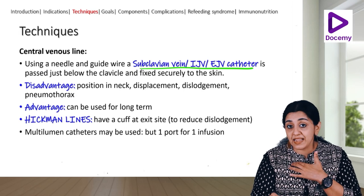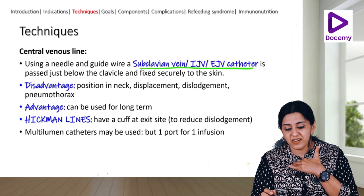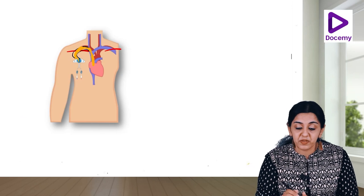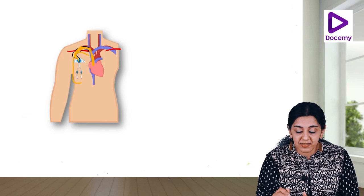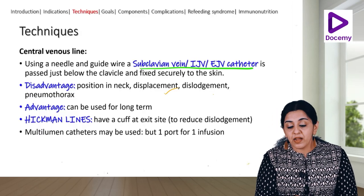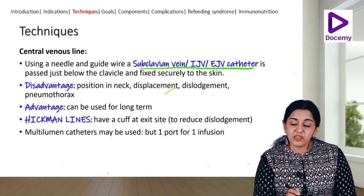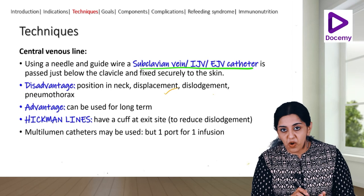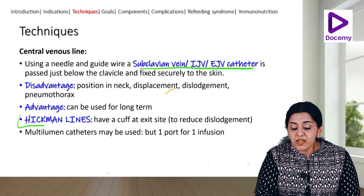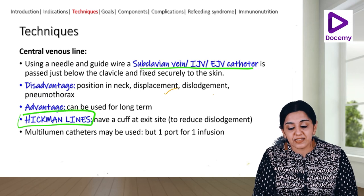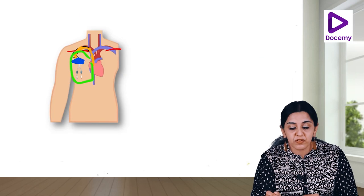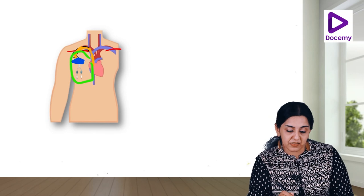Disadvantages of central line include the cannula being positioned in the neck, which is uncomfortable, prone to displacement, and can injure the pleura leading to pneumothorax. The advantage is that it can be used for a long time since it's a central vein and thrombophlebitis takes longer to develop. Hickman lines have a cuff at the exit site to reduce dislodgement, keeping the catheter in place.